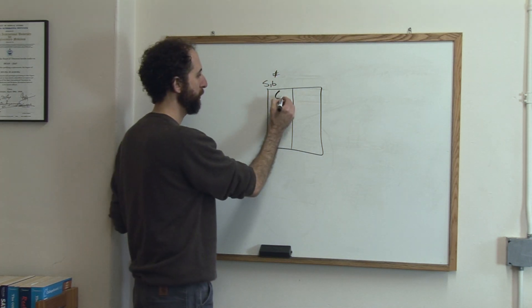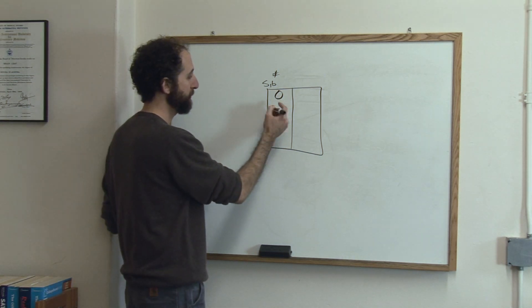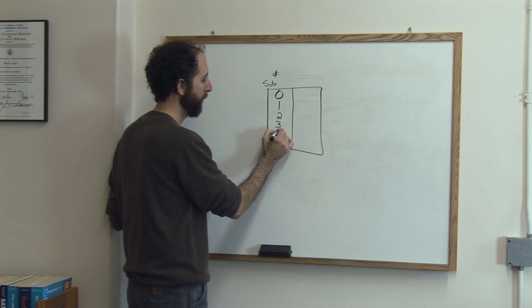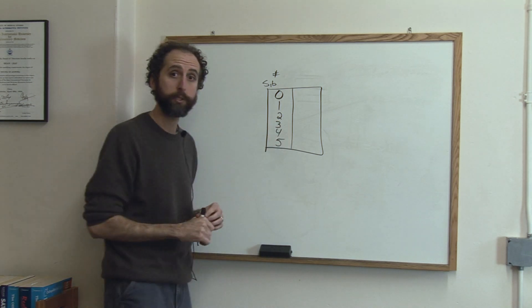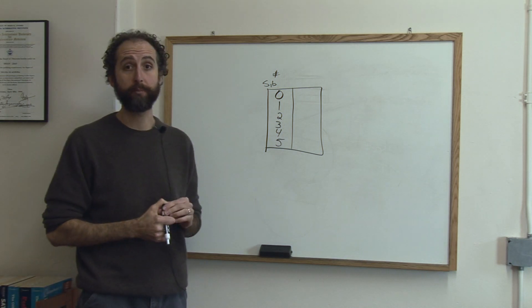So let's say somebody might have zero siblings. Siblings means brothers or sisters by the way. So let's say somebody might have zero, one, two, three, four or even five siblings. Let's say that in this particular classroom that's how many siblings somebody had.